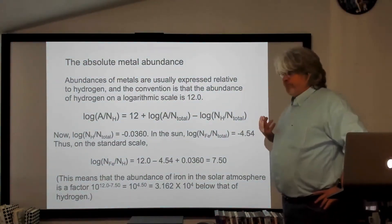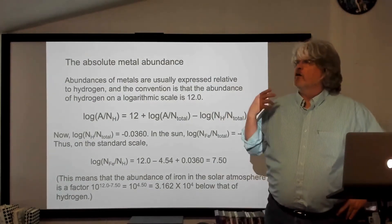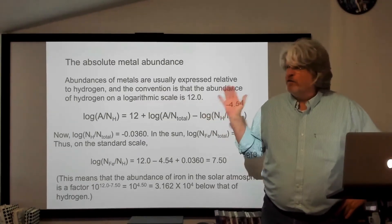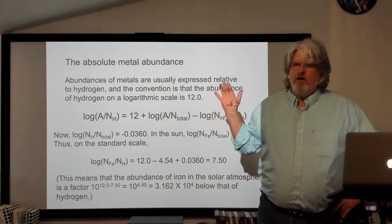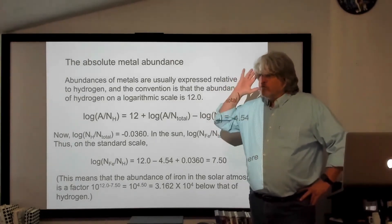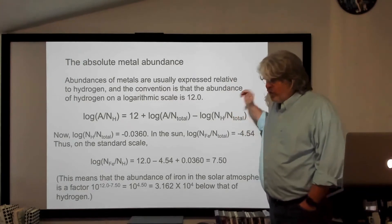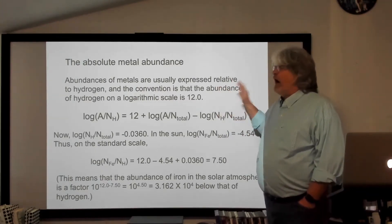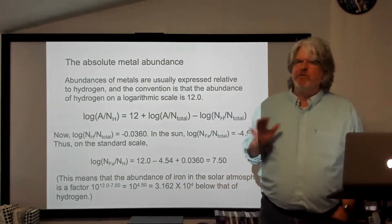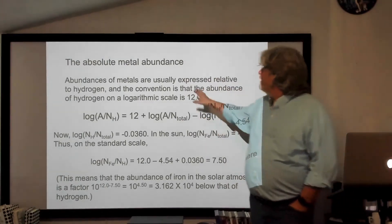You can talk about the abundances of atoms relative to the mixture we see in the sun — what's the carbon to iron ratio? How does carbon scale relative to iron in a star compared to the sun, or how does iron compare relative to hydrogen in the star versus the sun? At some point it also helps to talk about the absolute metal abundance: if I have a box of gas from the photosphere of this star, how many iron atoms, carbon atoms, or titanium atoms are in that box?